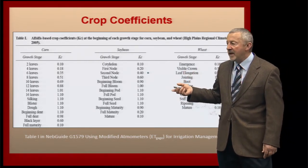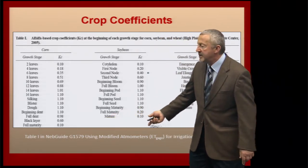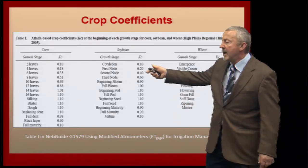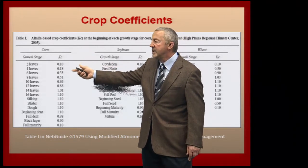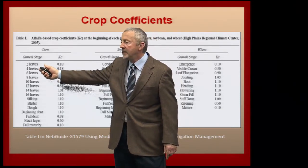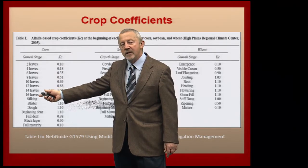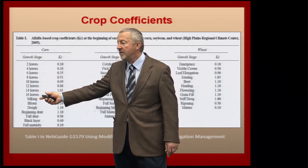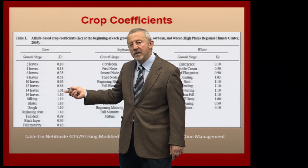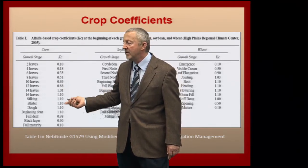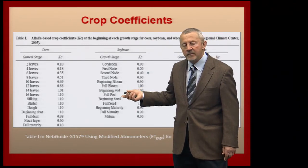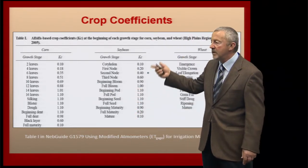There is a NEB guide available on our website on how to utilize the modified atmometer. This guide includes a table with crop coefficients based on the stage of crop growth. If you can go out in the field, stage the crop, and know whether it's at silking or a 14-leaf stage, you can convert the ET gauge reading or the High Plains Climate Center value directly to an estimated crop water use. These tables are especially important when planting dates vary across fields, and similar tables exist for soybeans and irrigated wheat as well.